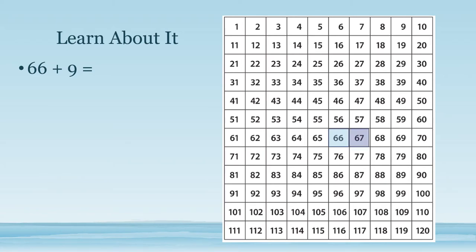Let's count on 9 times: 1, 2, 3, 4, 5, 6, 7, 8, 9. What patterns do you notice? Instead of being right below our first addend on the 120 chart, it's one space before on the next row. That's because if we add 10 we should be directly below our number, but since we're only adding 9 — and 9 is 1 less than 10 — we will be one space before on the line below. It's as if we're adding 10 and then taking 1 away. So 66 plus 9 is 75.